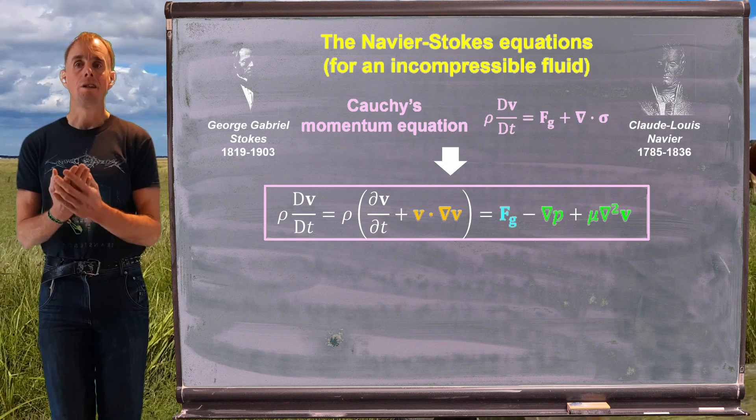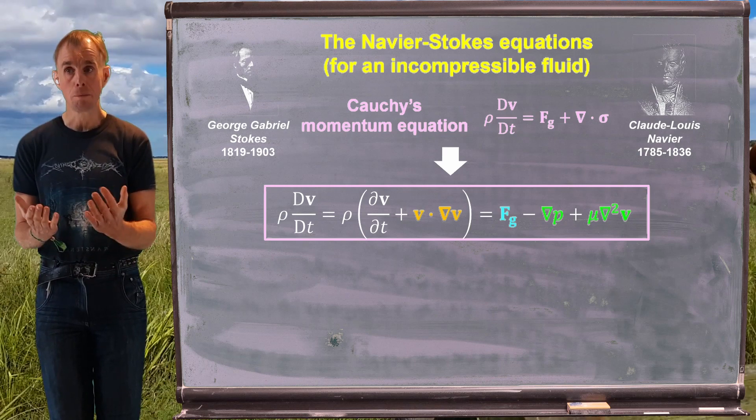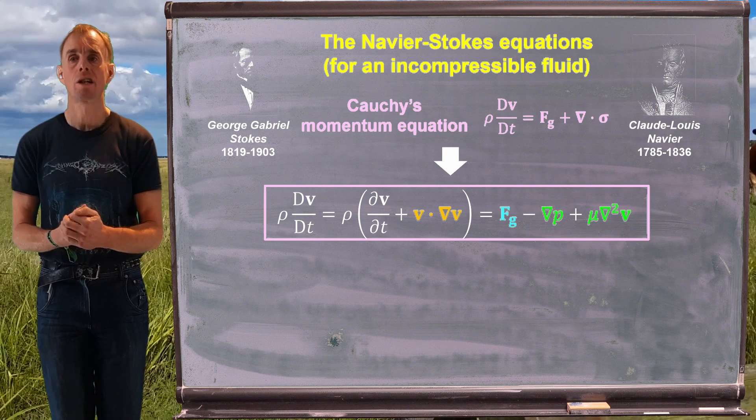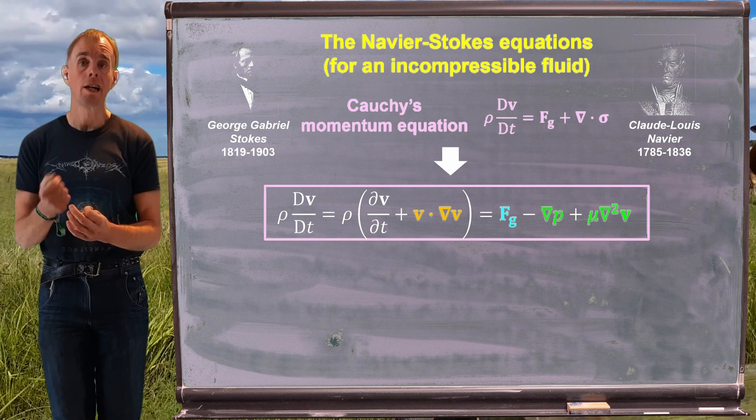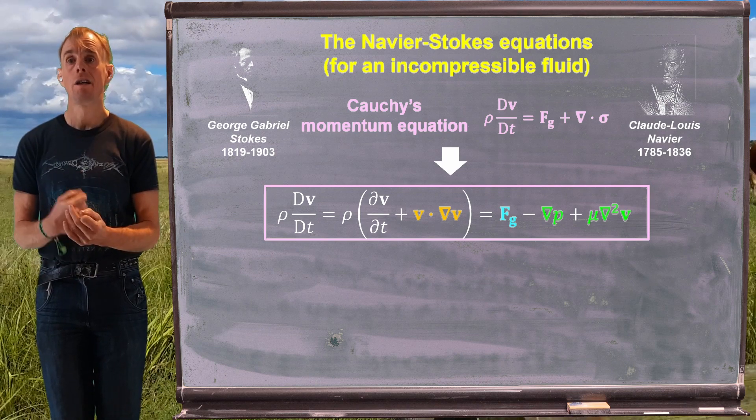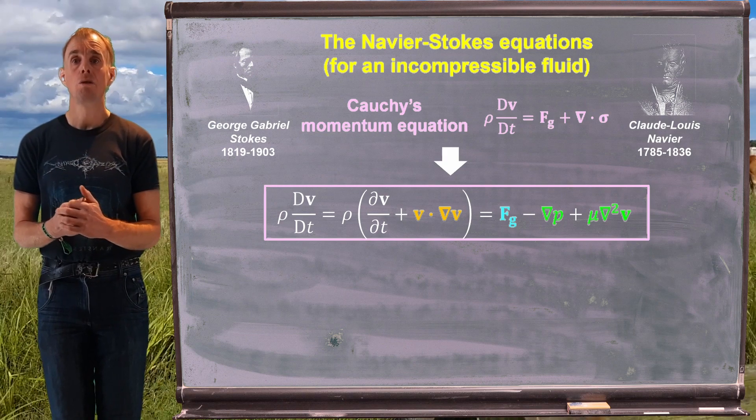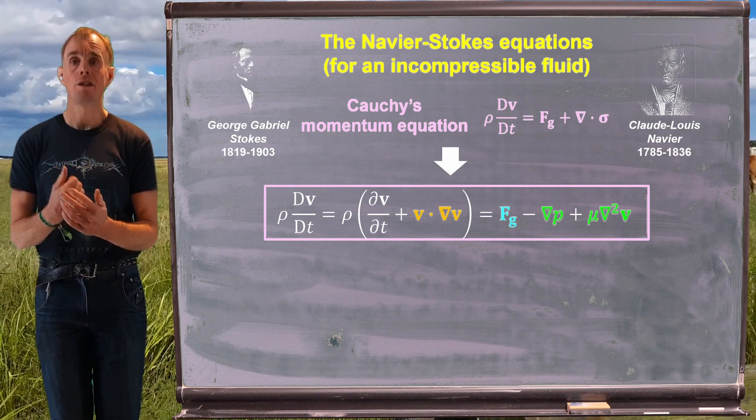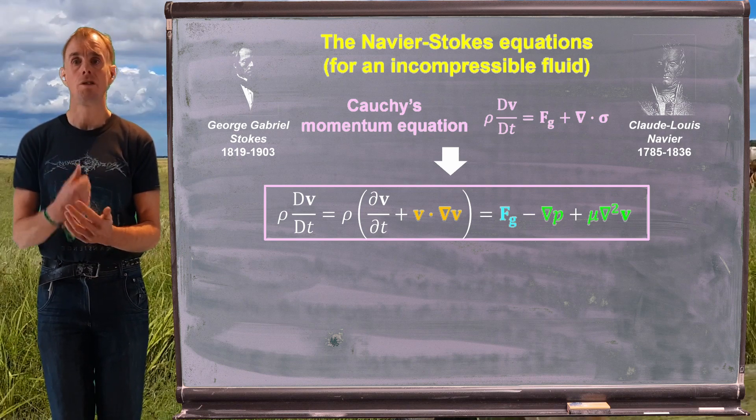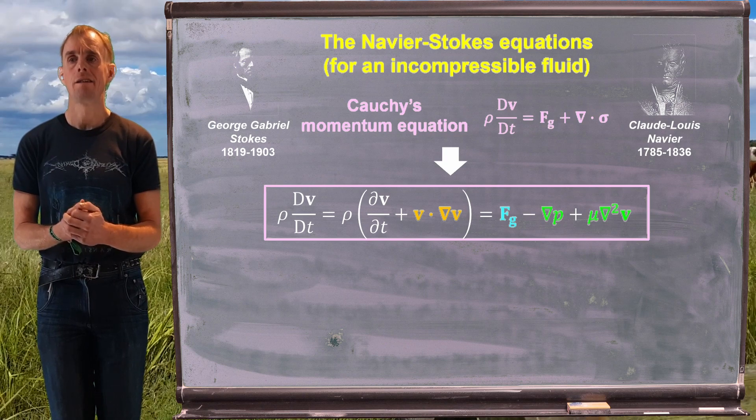And this leads us to the Navier-Stokes equations for an incompressible fluid, named after two people. Sir George Gabriel Stokes, who was Master of Pembroke College, Cambridge, and also the Lucasian Professor of Mathematics at Cambridge, the same post that Newton held, the same post that Stephen Hawking held. And we have Claude-Louis Navier, who was a French mathematician in the 1700s, and he was a student of Joseph Fourier, who you'll know from Fourier series. So two eminent and distinguished mathematicians and engineers.